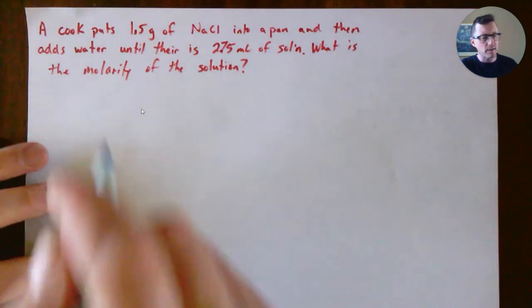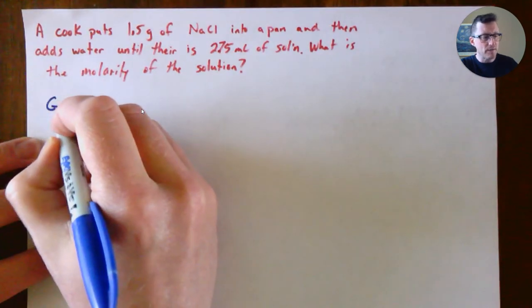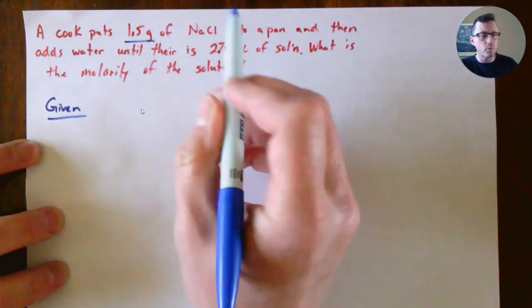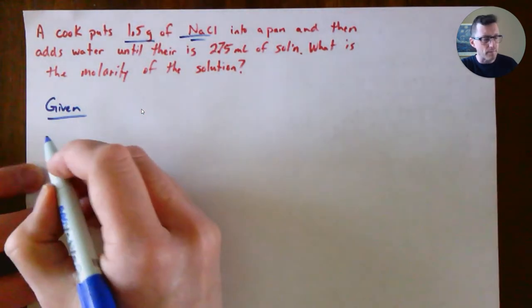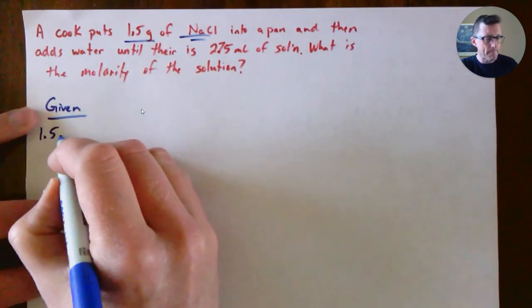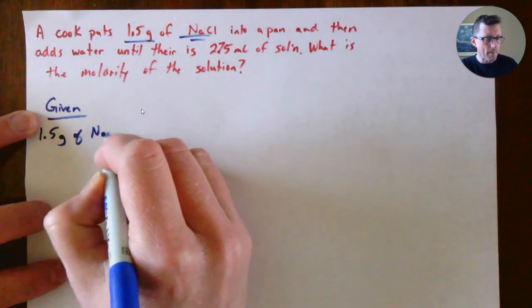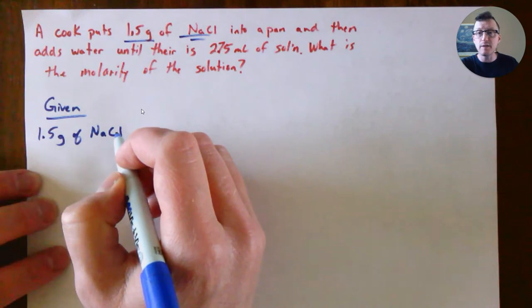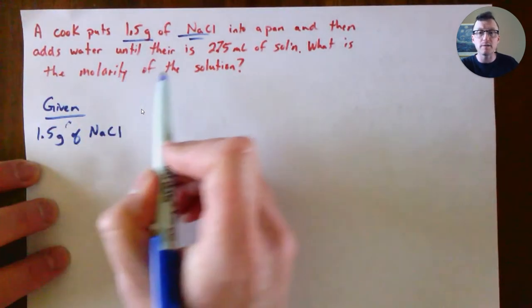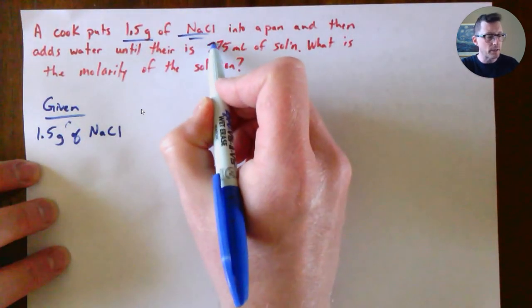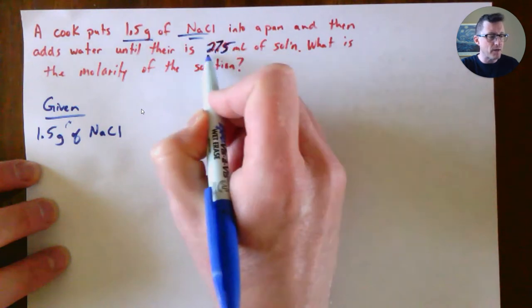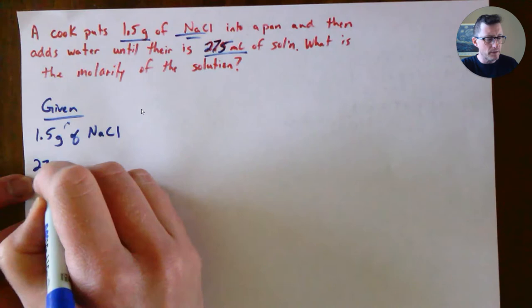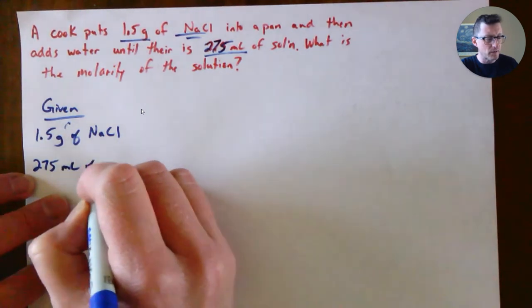In this case, when we look at what's given to us, we are given 1.5 grams of NaCl. It's in a pan and then the cook adds water until there is 275 milliliters of solution.